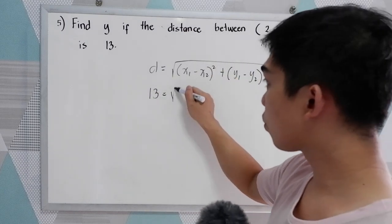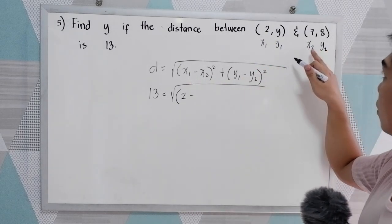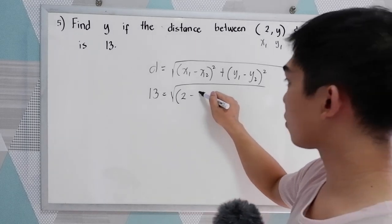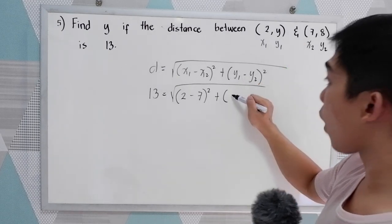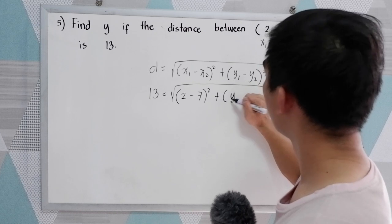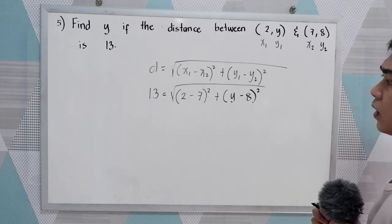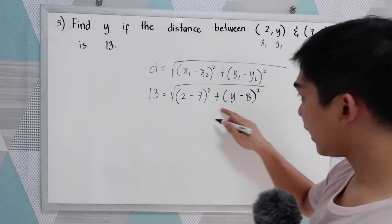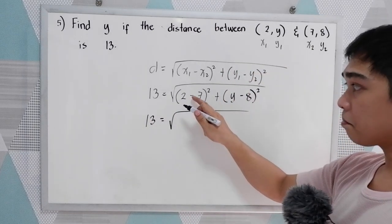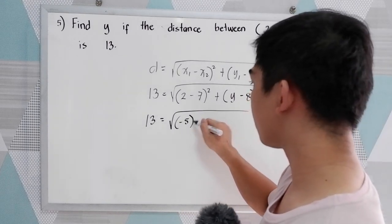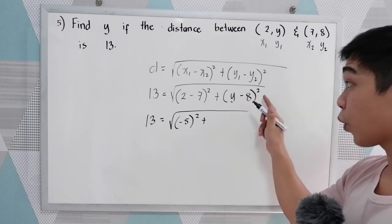So d is 13 equals the square root of (x₁ − x₂)²: x₁ is 2, minus x₂ is 7, squared, plus (y₁ − y₂)²: y₁ is y, minus y₂ is 8, then squared. Simplifying: 13 equals the square root of (2 − 7)² — that is (−5)² — plus (y − 8)². So we have the square of a binomial — your lesson from grade 8.